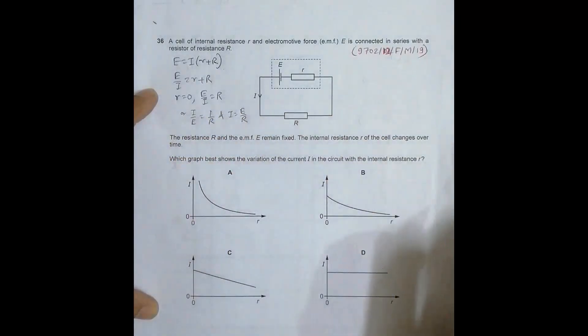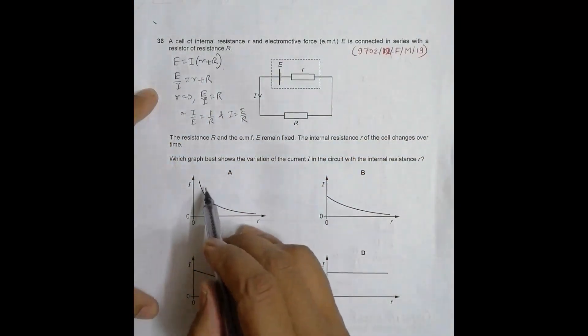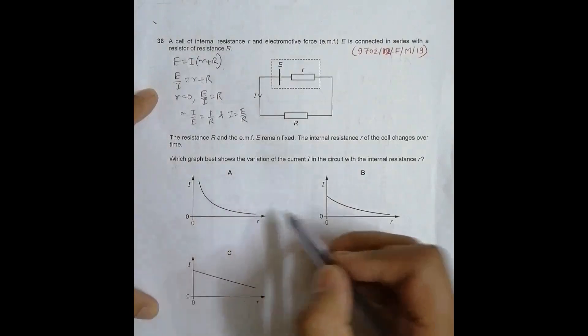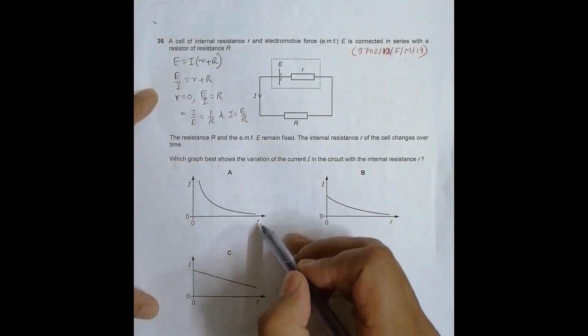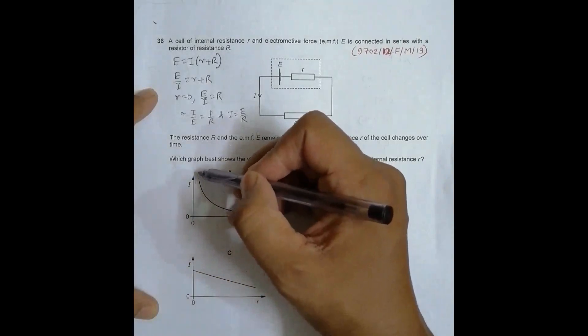Now if I look at the graphs, this graph disqualifies because it shows that when r equals 0, I might extend up to infinity. So this thing disqualifies, whereas all the other three qualify.